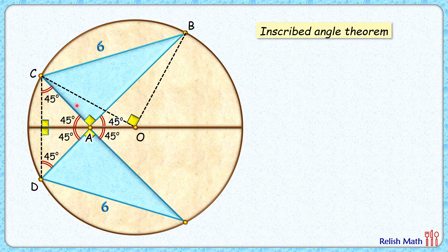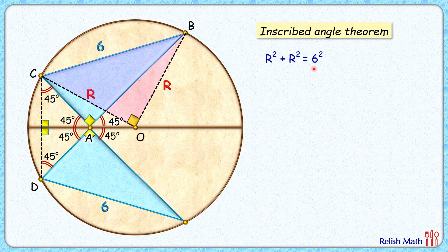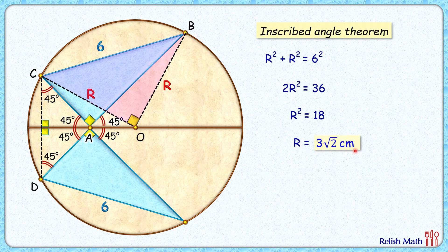Now BO and CO these are the radius of the circle so R centimeter. Now if you'll observe BOC this triangle is a right angle triangle applying Pythagoras theorem we'll get R square plus R square is 6 square or 2R square is 36, R square is 18, and R that will be 3 root 2 centimeter and that's our answer.